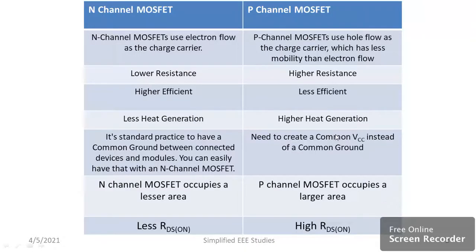In the case of n-channel MOSFET, electrons are the charge carriers. Whereas in the case of p-channel MOSFET, holes are the charge carriers.